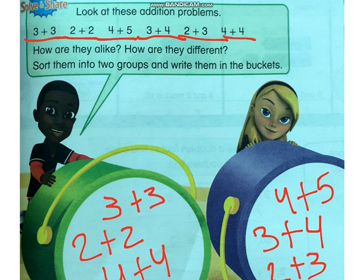Now, we put numbers in different buckets — one bucket is the same double number, and the second bucket is not the same. Now, how are we going to do near doubles? Let's take a look at the next page so we can learn and practice near doubles.